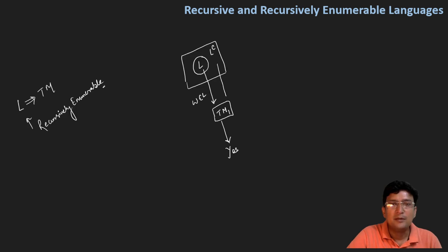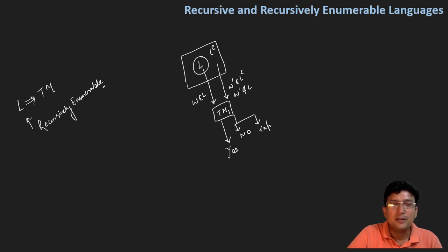मान लीजिए कि हम language complement में से एक string pick करते हैं, let's say that string is w', which is the part of language complement, या फिर आप यह भी कह सकते हैं कि w' is not the part of language L. अगर हम इस string को Turing machine 1 को provide करते हैं, तो हो सकता है कि यह कह दे कि यह w' this does not belong to this language, या फिर यह Turing machine एक infinite loop में भी जा सकता है, without producing yes or no.